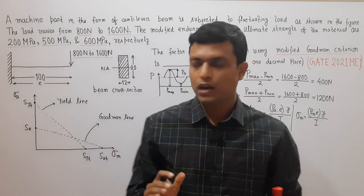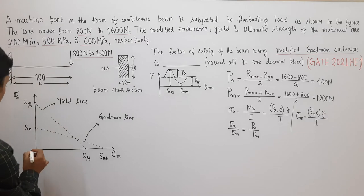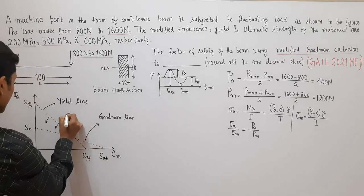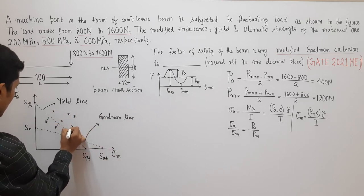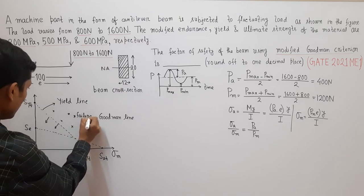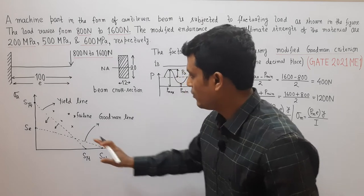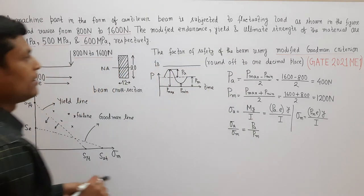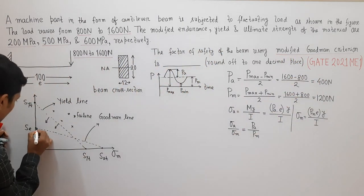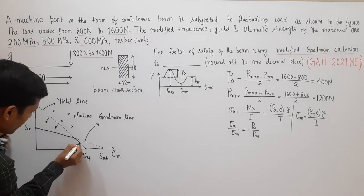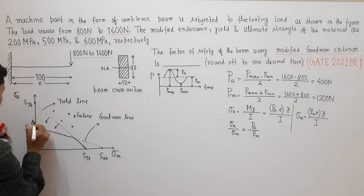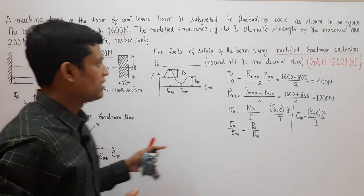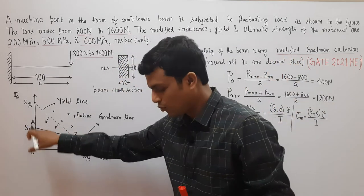The safe region under the modified Goodman diagram is the area O-A-B-C, where A is on the vertical axis at Se, B is the intersection of the Goodman line and the yield line, and C is on the horizontal axis at S_YT. During design, the operating point must fall inside these lines. This is the modified Goodman diagram.